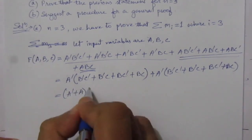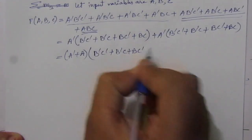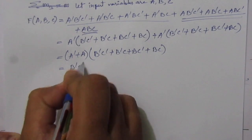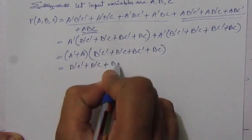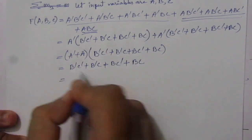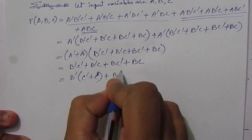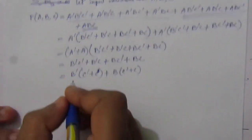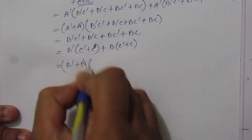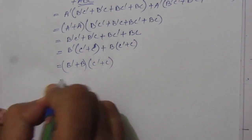And for the last four terms we take a common, giving (ā + a) times (b̄c̄ + b̄c + bc̄ + bc). Since ā + a = 1, we can write it as b̄c̄ + b̄c + bc̄ + bc. From the first two terms we take b̄ common to get c̄ + c, and from the last two terms we take b common to get c̄ + c. So we can rewrite it as (b̄ + b)(c̄ + c). Both terms equal 1, so the answer is 1.